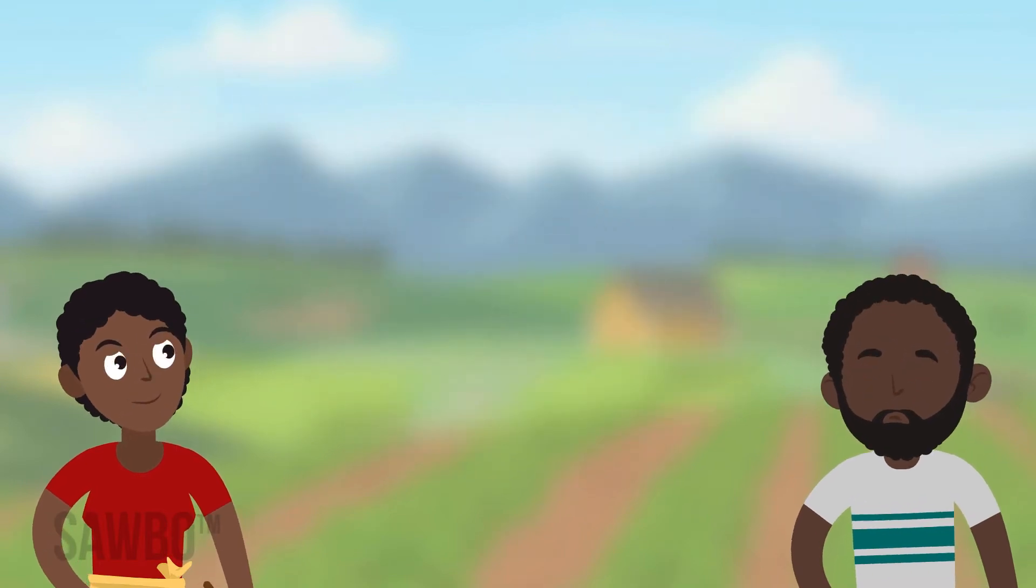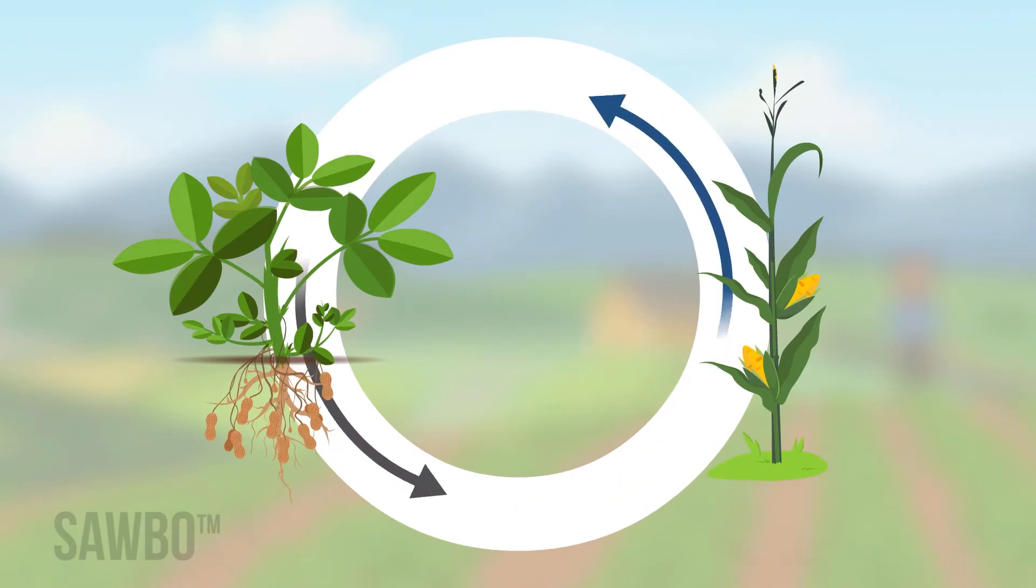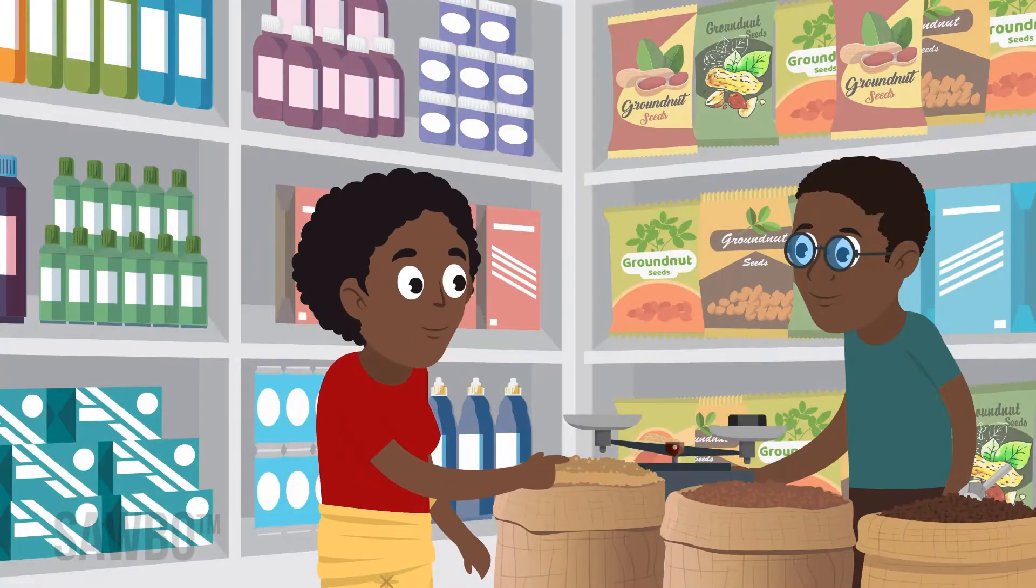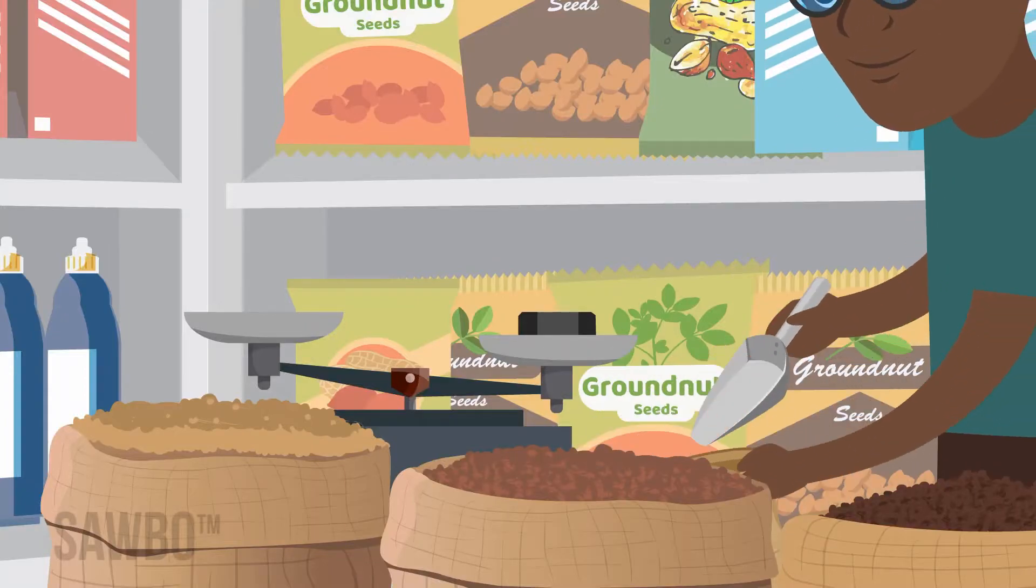In your field, rotate crops from season to season, such as maize and groundnut, to improve soil health and reduce diseases. Choose the right variety for your land and market. There may be newer varieties that produce more groundnuts, resist diseases, or mature in a better time for your land.